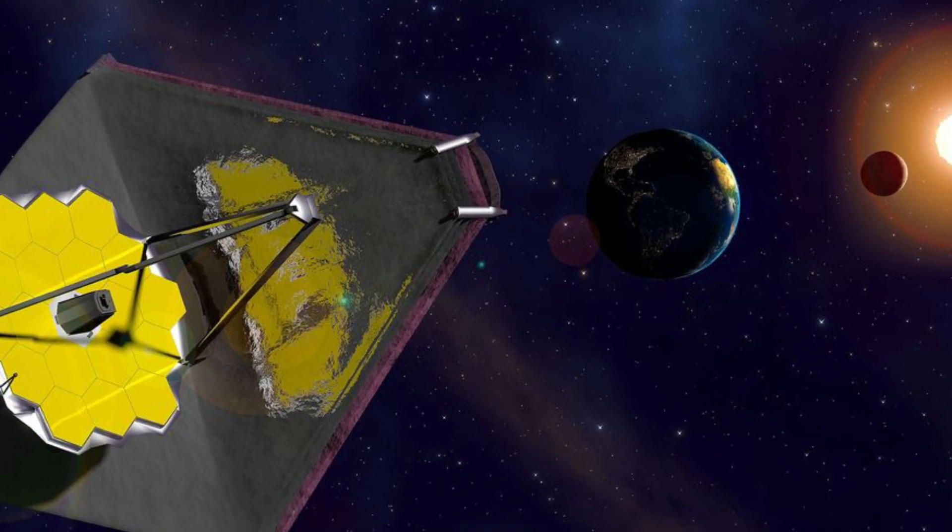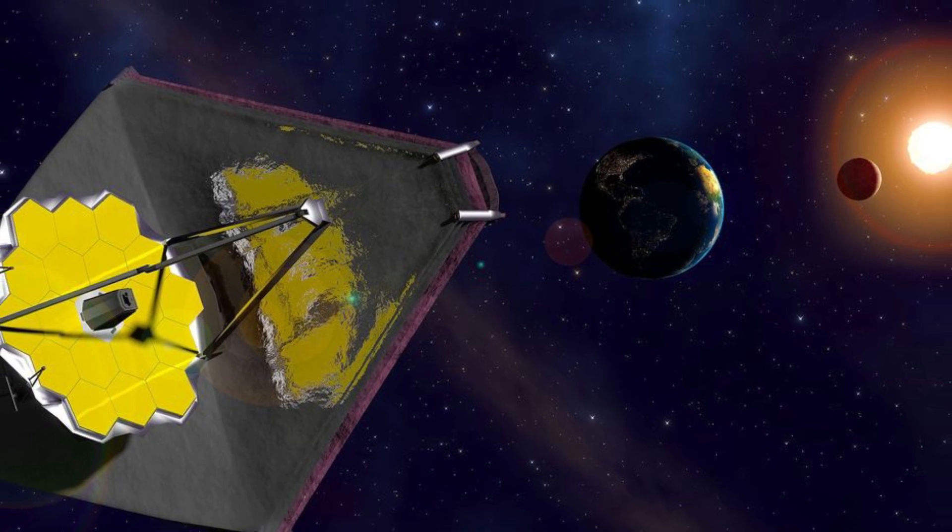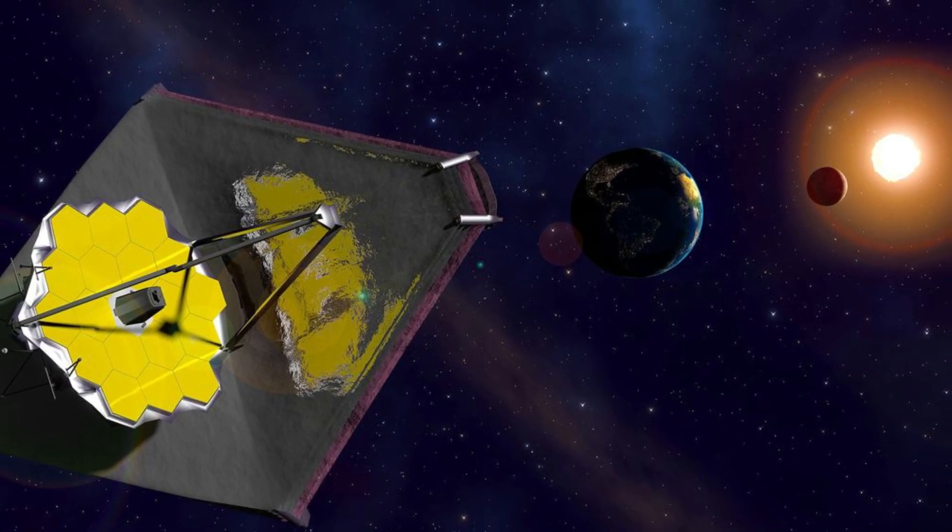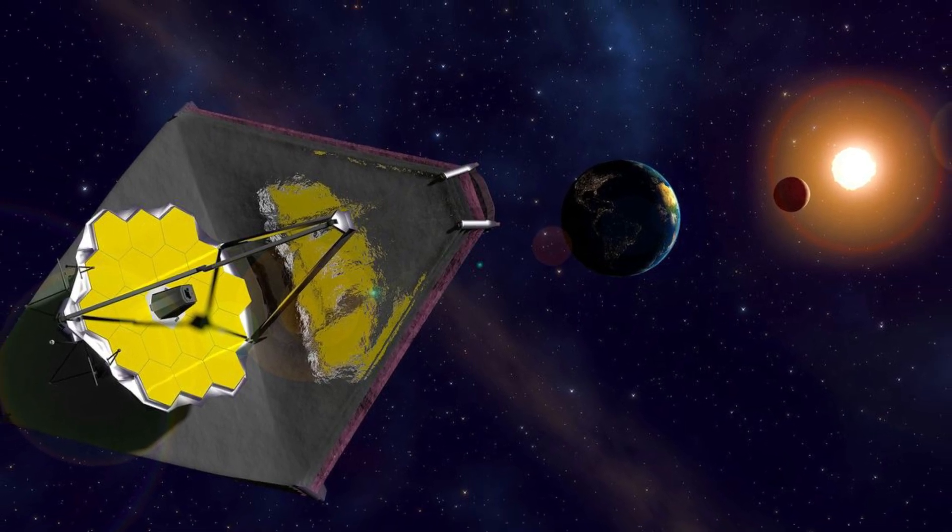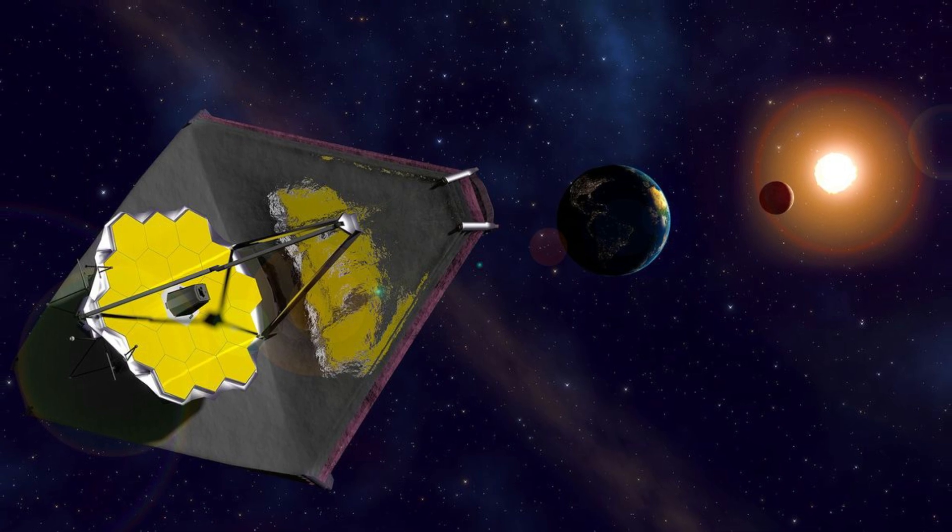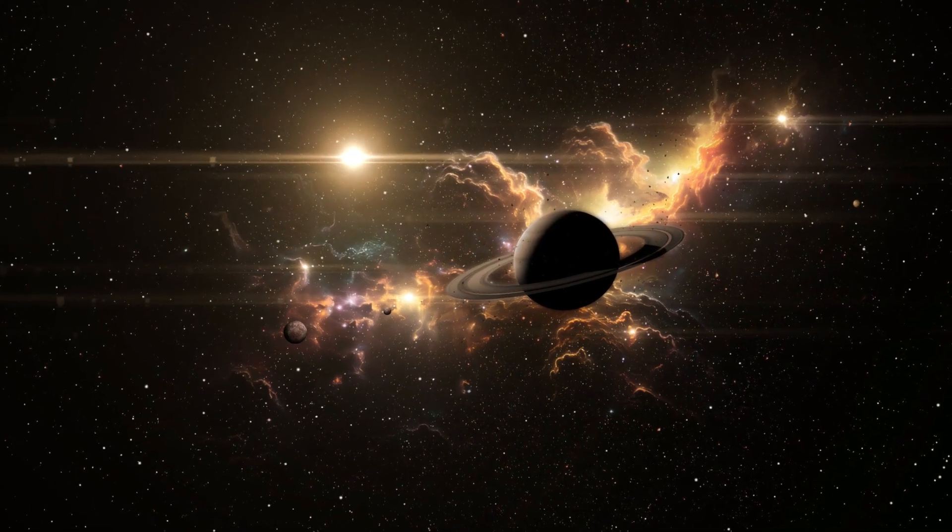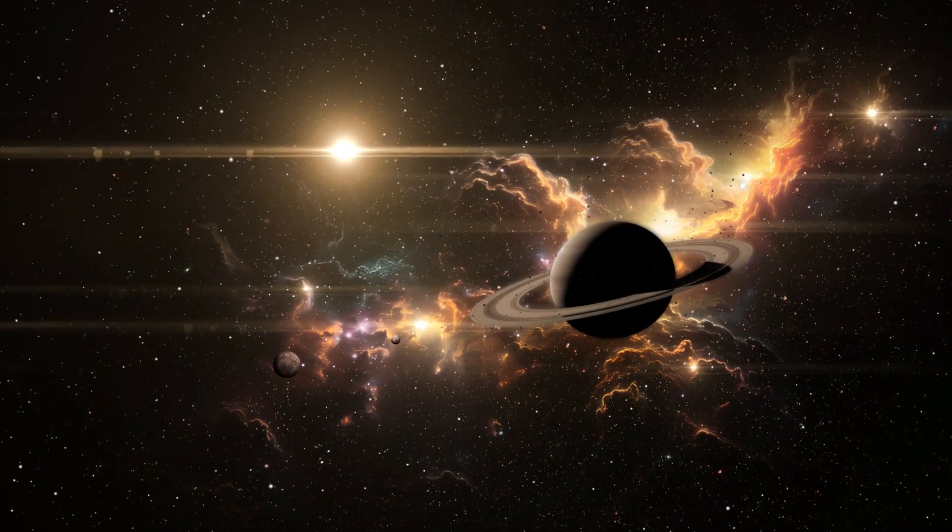The discovery challenges previous assumptions that the planet, despite its location in the Goldilocks zone—the region where conditions might support liquid water—was incapable of supporting life due to its exposure to intense radiation from its host star, Proxima Centauri.